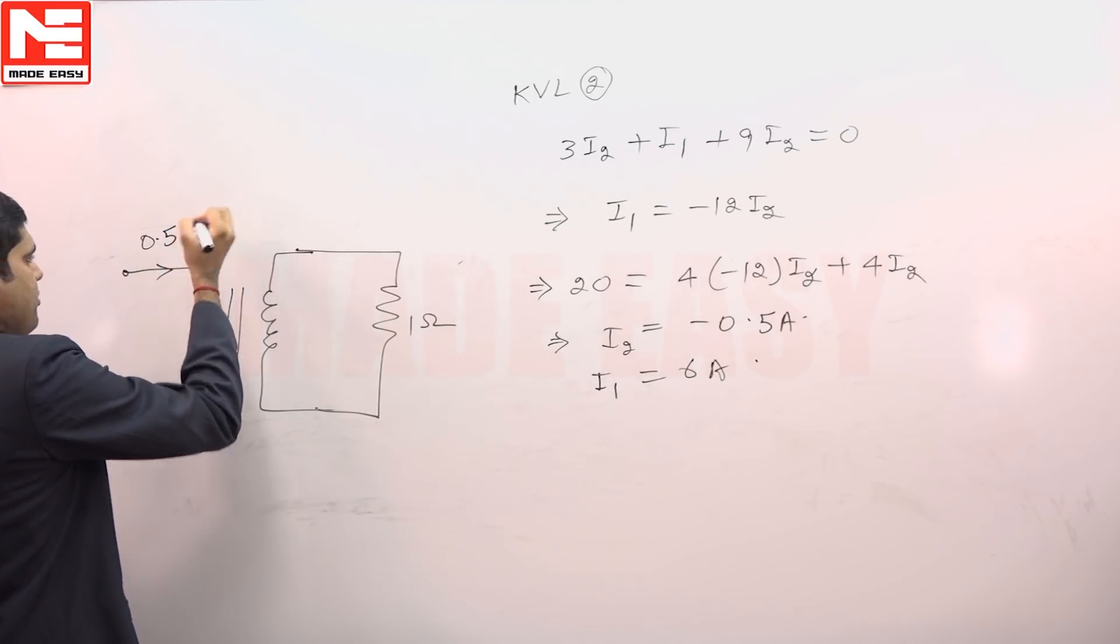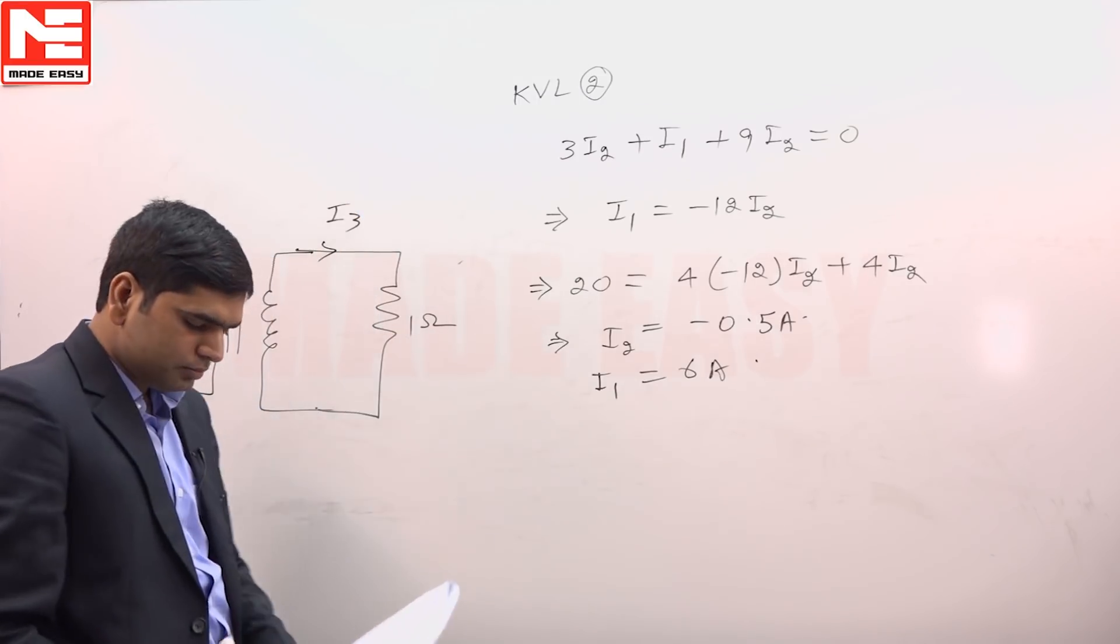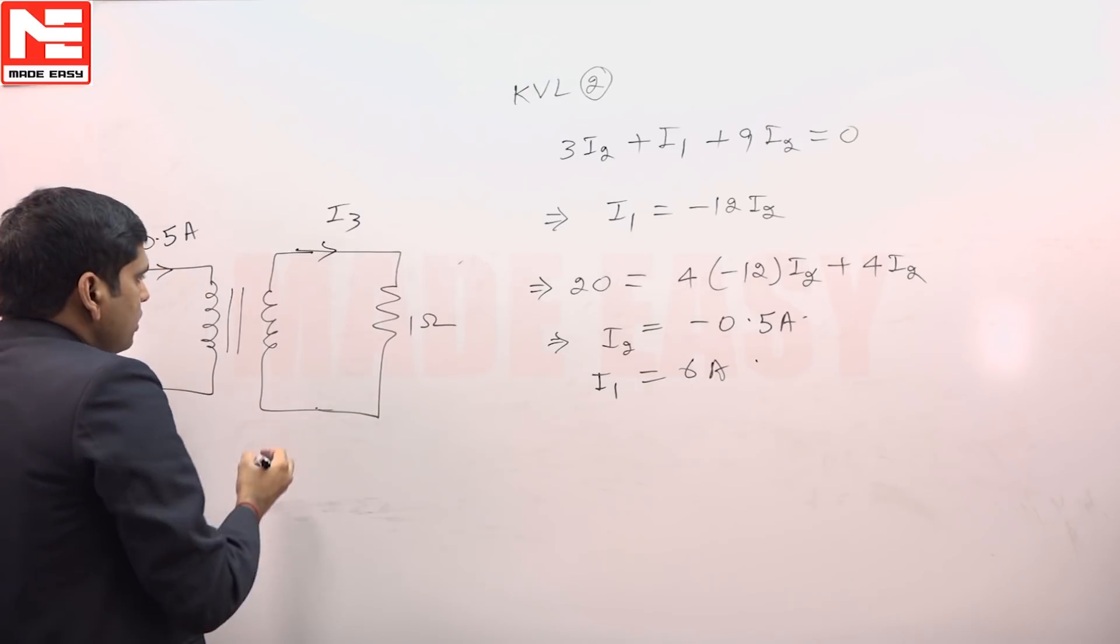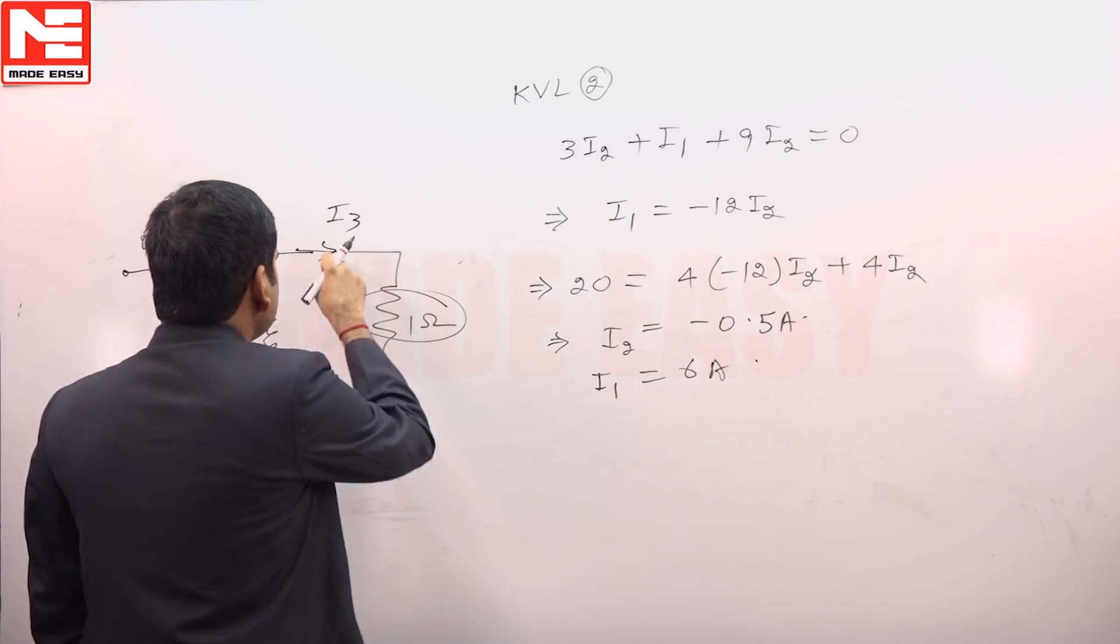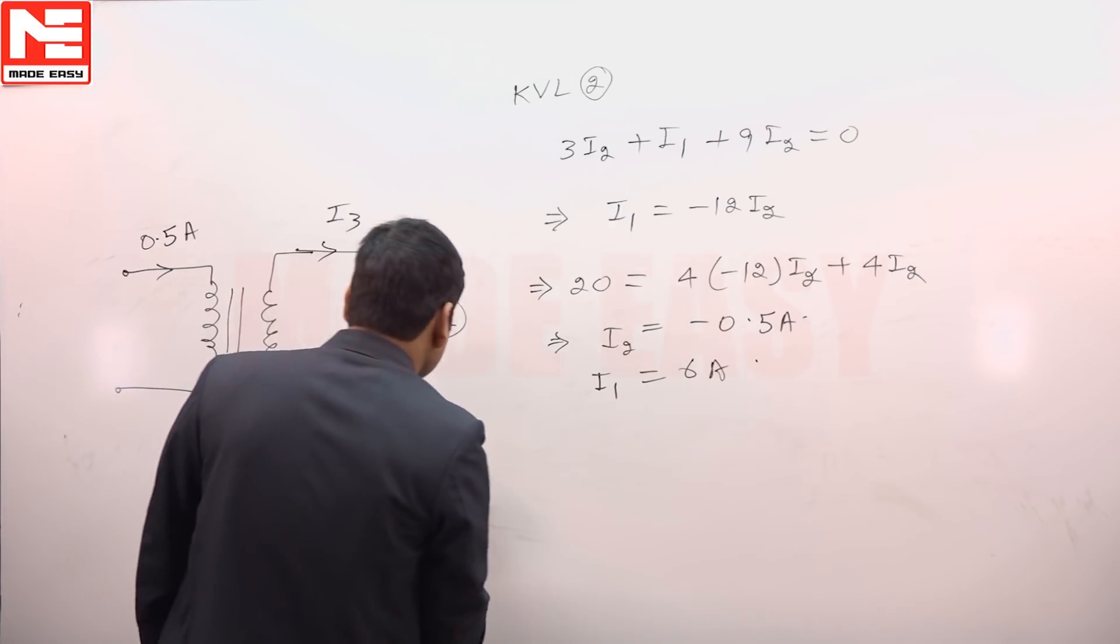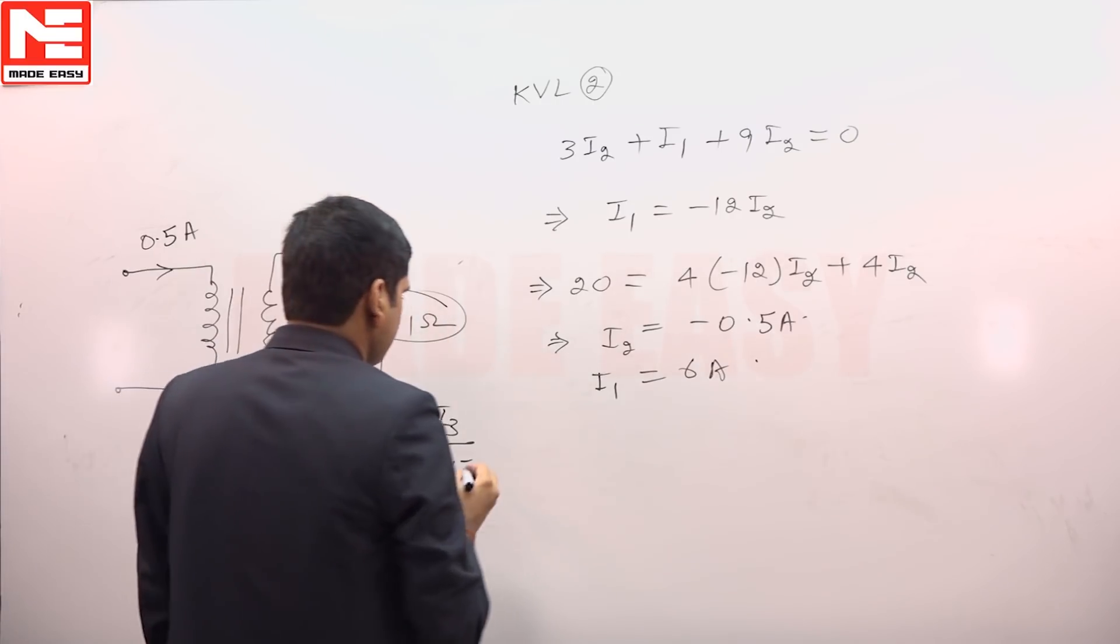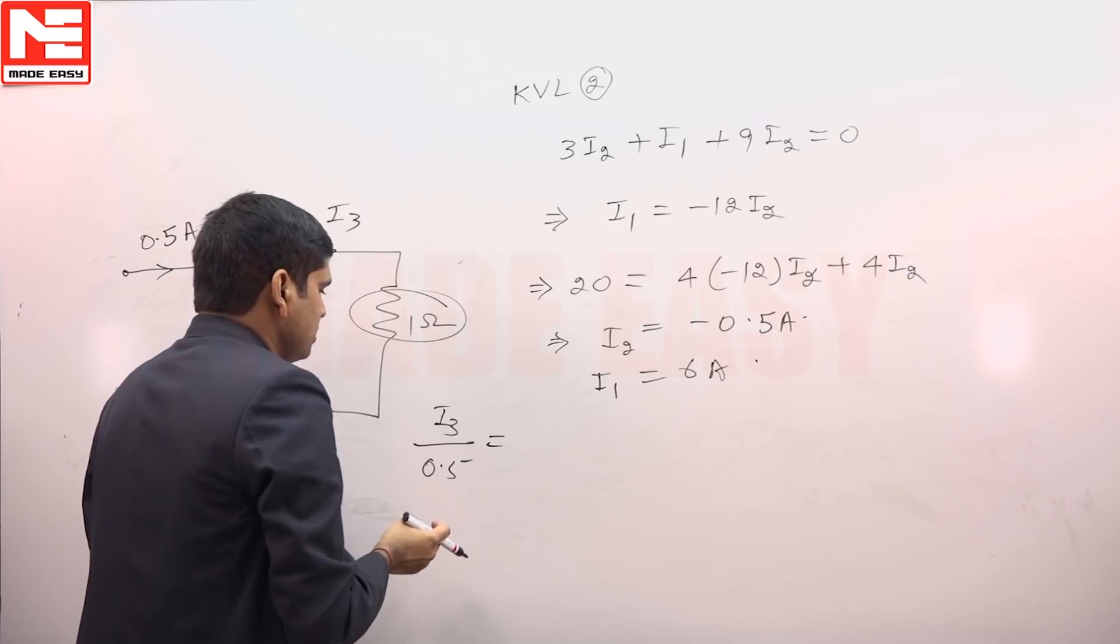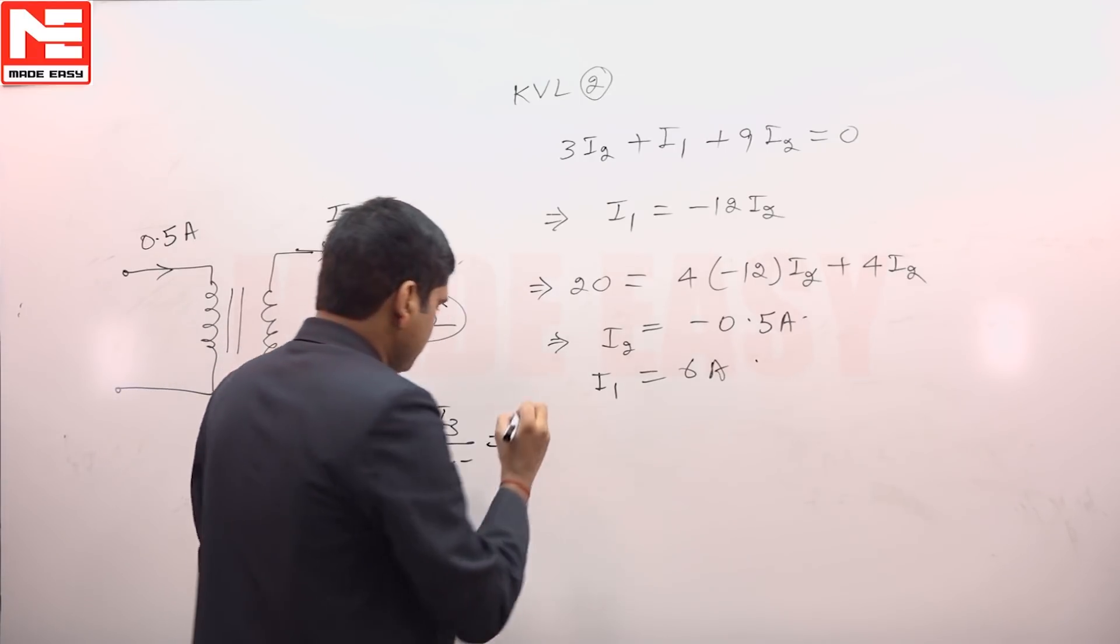Suppose this current is I3 and we need to calculate current I3 so that we can calculate power delivered. I3 divided by I2, that is 0.5.